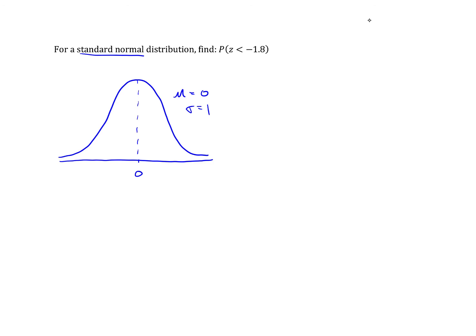The value in question is negative 1.8 and I want the probability that z is less than that, so I would shade to the left.